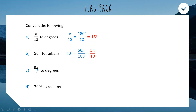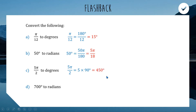For part c, we write π as 180 degrees, so 5π/2 is 5 times 180 divided by 2. It's easier to divide first: 180 divided by 2 is 90, then multiply by 5 to get 450 degrees.